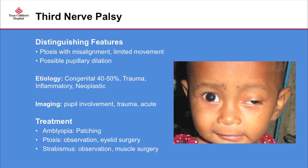Imaging is indicated if there's pupillary involvement, trauma, or if the palsy is acute. For treatment, we recommend addressing any underlying etiology. If amblyopia is present, patching is indicated. We recommend surgery for patients who have a congenital third nerve palsy. If there's an underlying condition, we observe and see if the third nerve palsy resolves as the condition improves. If it doesn't, we recommend surgery — typically we wait about six months.